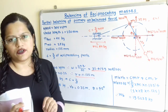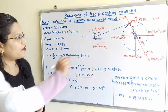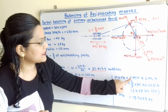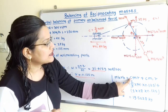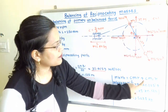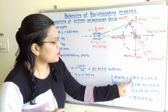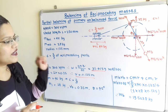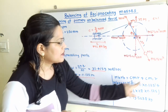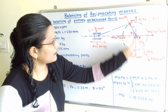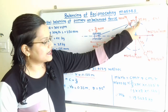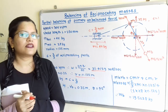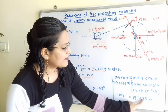To find the balancing mass Mb: Mb·Rb = C·M·R + C·M1·R. Substituting values: Mb × 0.35 = (2/3 × 40 × 0.125) + (1 × 28 × 0.125). Solving, the only unknown is Mb, which equals 19.5238 kg.